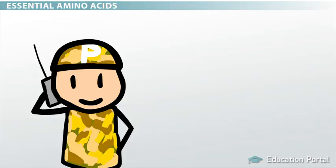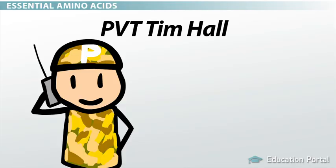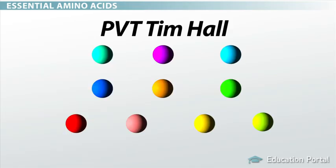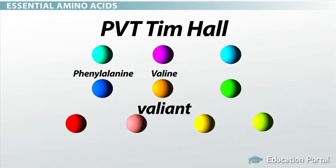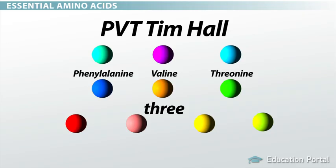You can remember the names of the 10 essential amino acids by using the mnemonic Private Tim Hall. The P in PVT, or Private, stands for phenylalanine, which has a chemical makeup that consists of a big side chain, so we get to start our mnemonic with something big. Valine is next, which sounds somewhat valiant, which is a good word to associate with a private in the military. This is followed by threonine, and that 'thre' in the beginning is nice because it's the third amino acid in our mnemonic.